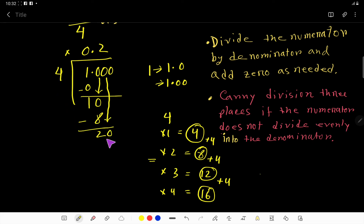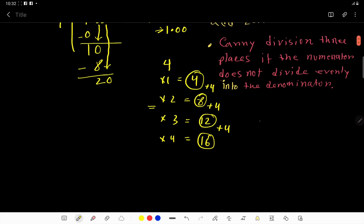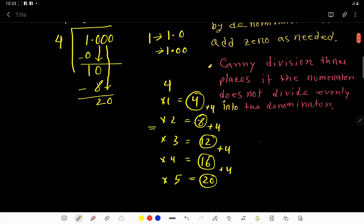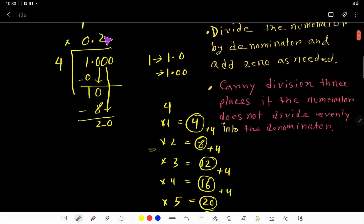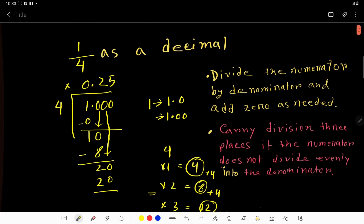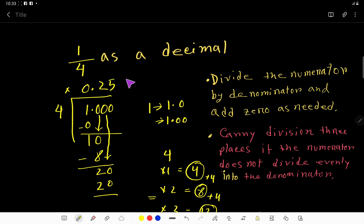Now 4 goes into 20 how many times? We need the multiplication table: 4 times 5 is 20. So 4 goes into 20 five times. If you multiply 5 times 4, that is 20. So if you express 1 by 4 as a decimal, you get 0.25. This is the answer.